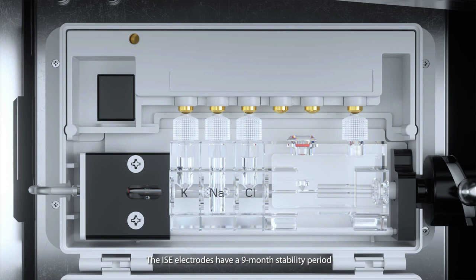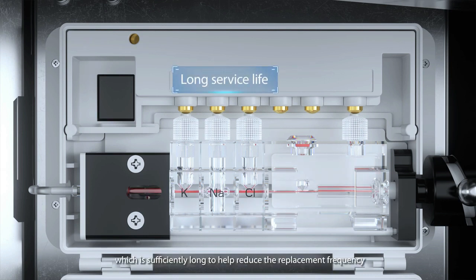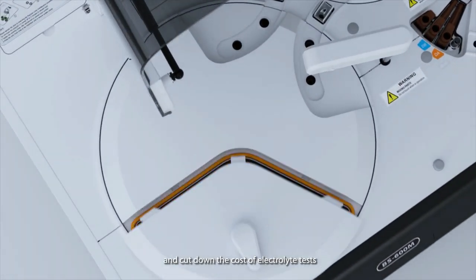The ISE electrodes have a nine-month stability period, which is sufficiently long to help reduce the replacement frequency and cut down the cost of electrolyte tests.